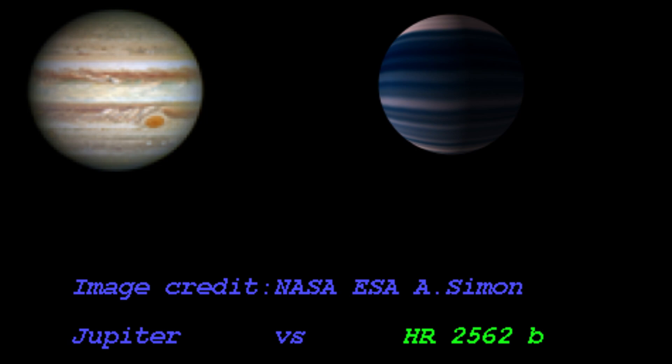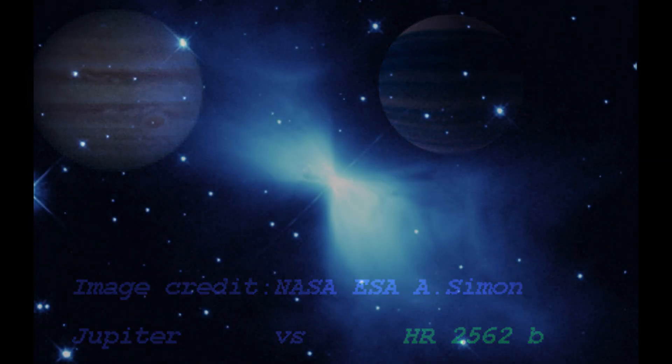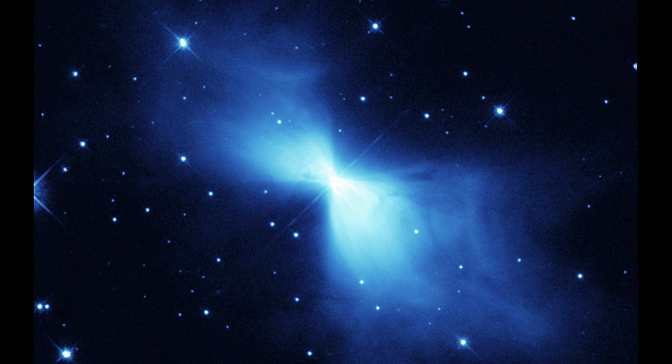The most massive known planet, HR 2562b, is over 30 times more massive than Jupiter. The coldest known place in the universe is the Boomerang Nebula, which has a temperature of minus 458 degrees Fahrenheit.